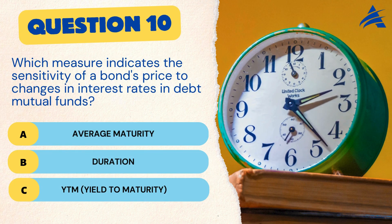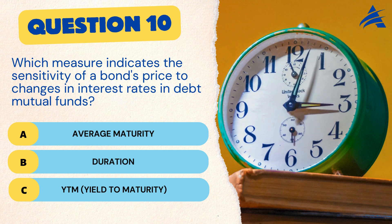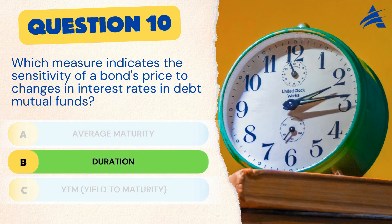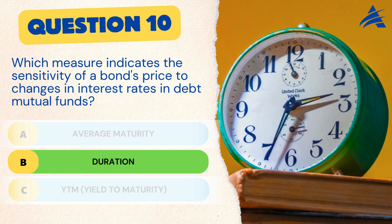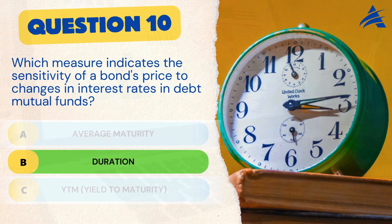Question 10. Which measure indicates the sensitivity of a bond's price to changes in interest rates in debt mutual funds? A. Average maturity. B. Duration. C. Yield to maturity. The correct answer is B. Duration. Duration helps investors gauge how much a bond's price is likely to change in response to changes in interest rates. Understanding duration is key to managing interest rate risk effectively.